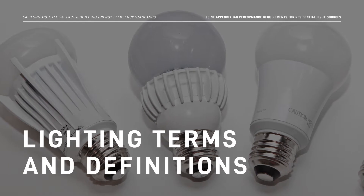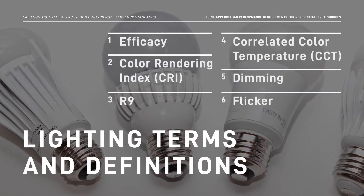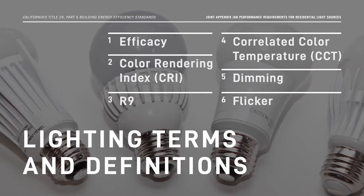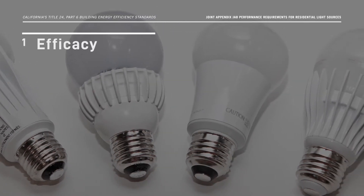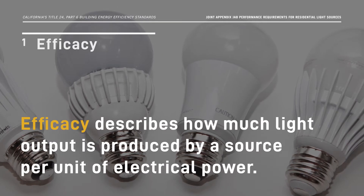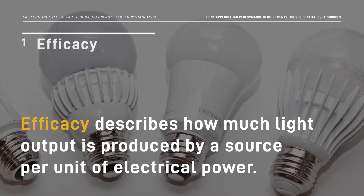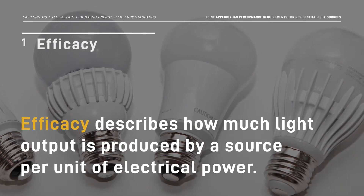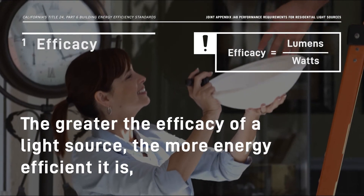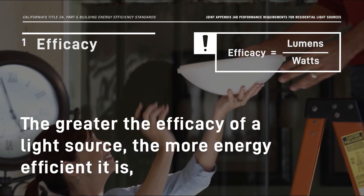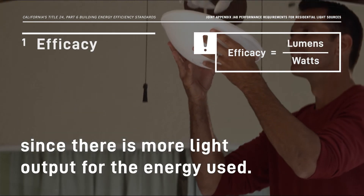Now that we know which light sources must be JA8 certified, let's go over a few lighting terms so you can better understand the requirements. First, let's define efficacy. Efficacy describes how much light output is produced by a source per unit of electrical power. It is measured in lumens per watt. The greater the efficacy of a light source, the more energy-efficient it is, since there is more light output for the energy used.